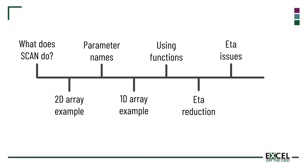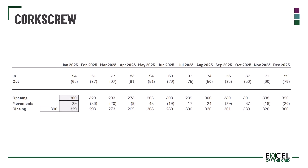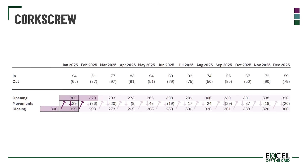Let's look at a common use case for the SCAN function: corkscrew calculations. This is where we have a closing balance from the previous period that becomes the opening balance for the next period. We then have movements and a closing balance, and again that closing balance becomes the opening value for the next period, creating this corkscrew type effect.